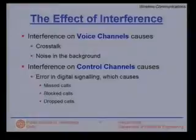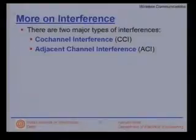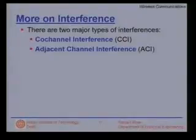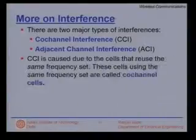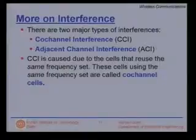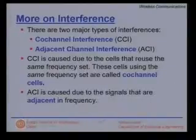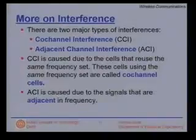Clearly, we have to do something about controlling interference. There are two major types: co-channel interference (CCI), caused by cells that reuse the same frequency set — these are called co-channel cells — and adjacent channel interference (ACI), caused by signals that are adjacent in the frequency band.